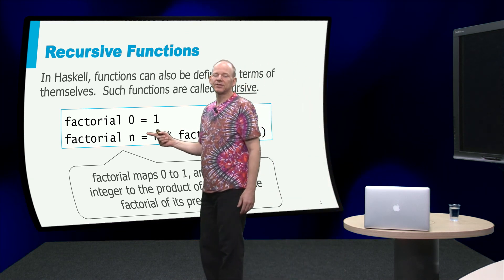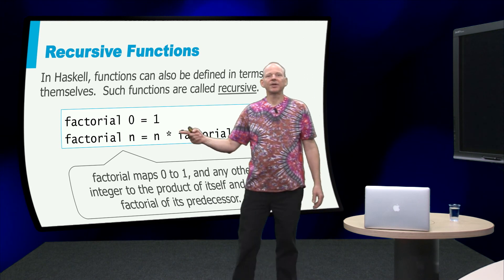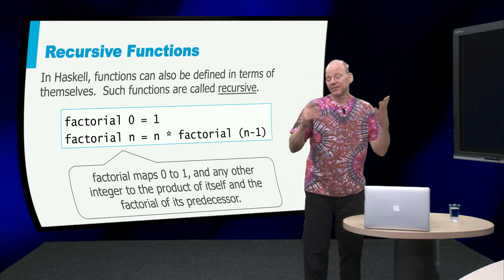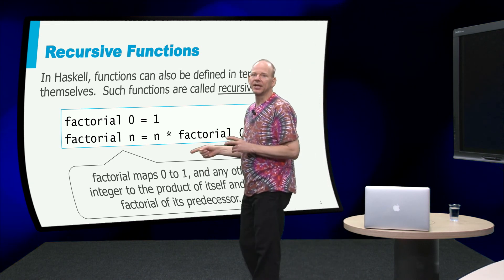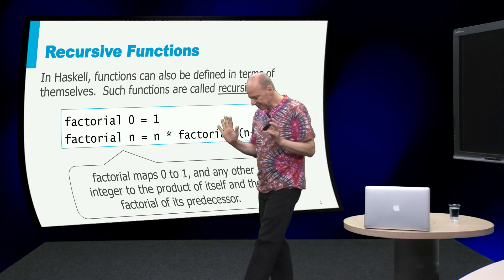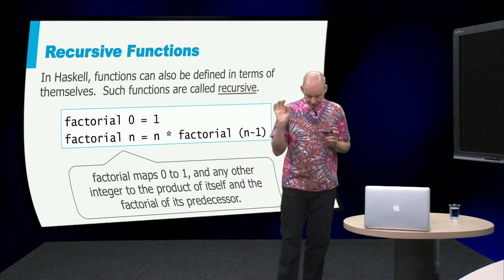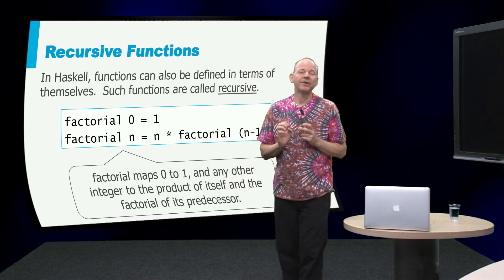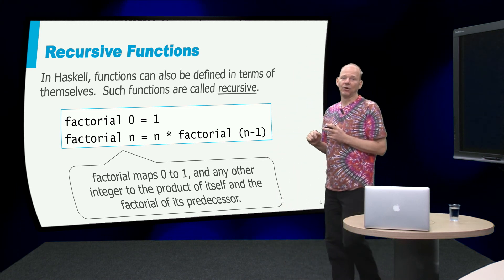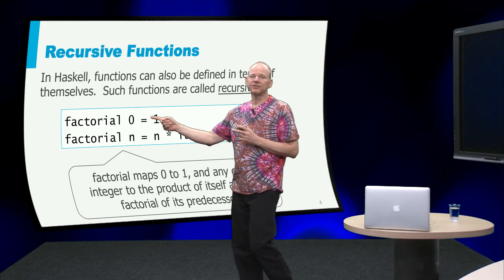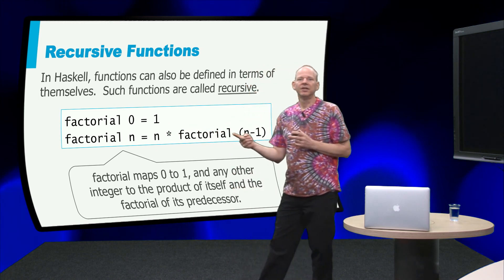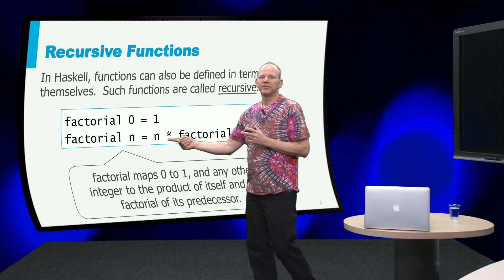And in previous version of Haskell there were so called n plus k patterns where you could write the factorial of 0 and the factorial of n plus 1, but n plus k patterns have been deprecated so now we will have to write it in this form. But apart from that minor detail, what you can see is that it is very very similar to the way you define recursion over lists. There are two cases 0 and n and if it is 0 it is 1 and otherwise you just take the factorial of n minus 1 times n.